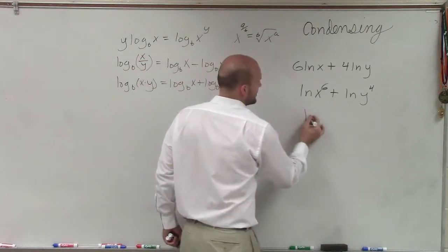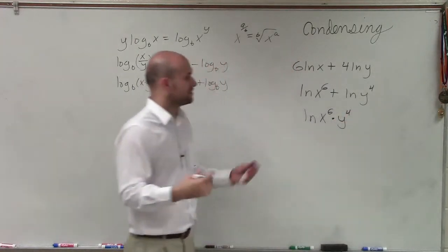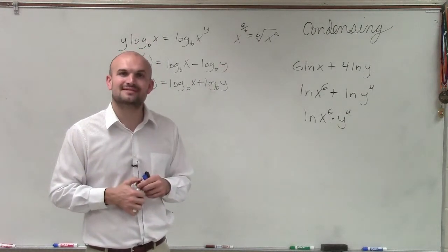So therefore, I can rewrite this as ln of x to the 6th times y to the 4th. So there you go, ladies and gentlemen. That is how you condense your logarithms to one single quantity. Thanks.